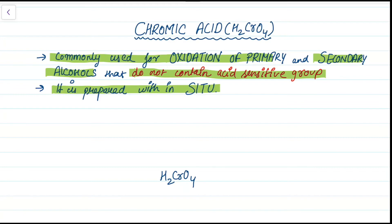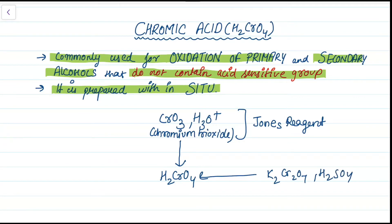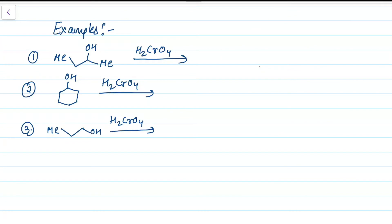To generate chromic acid in situ, we have three common methods. First: CrO3 (chromium trioxide) dissolved in acid — this is known as Jones reagent. Second: K2Cr2O7 (potassium dichromate) plus H2SO4 also gives chromic acid. Third: Na2Cr2O7 (sodium dichromate) plus H2SO4 also forms chromic acid.